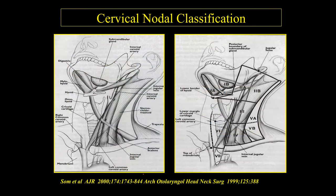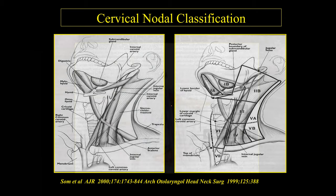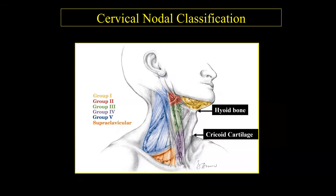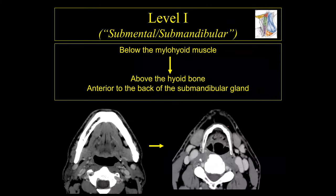The original paper written back in 2000 defined the various levels of the lymph nodes using schematic illustrations. This is not the way we typically view cross-sectional imaging of the head and neck. So we need consistent landmarks: if we can identify the hyoid bone and the cricoid cartilage, we will always be able to identify the various levels of the lymph nodes of the head and neck.